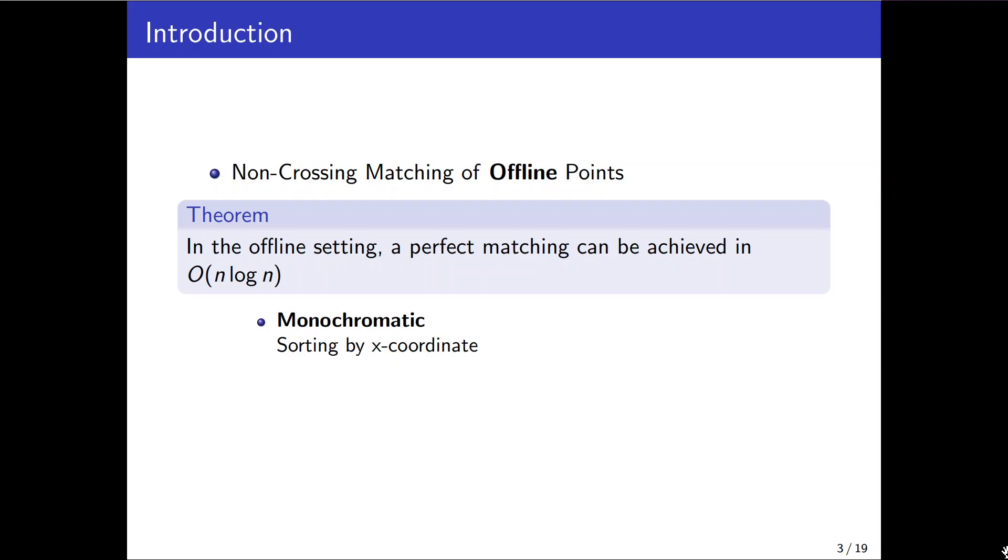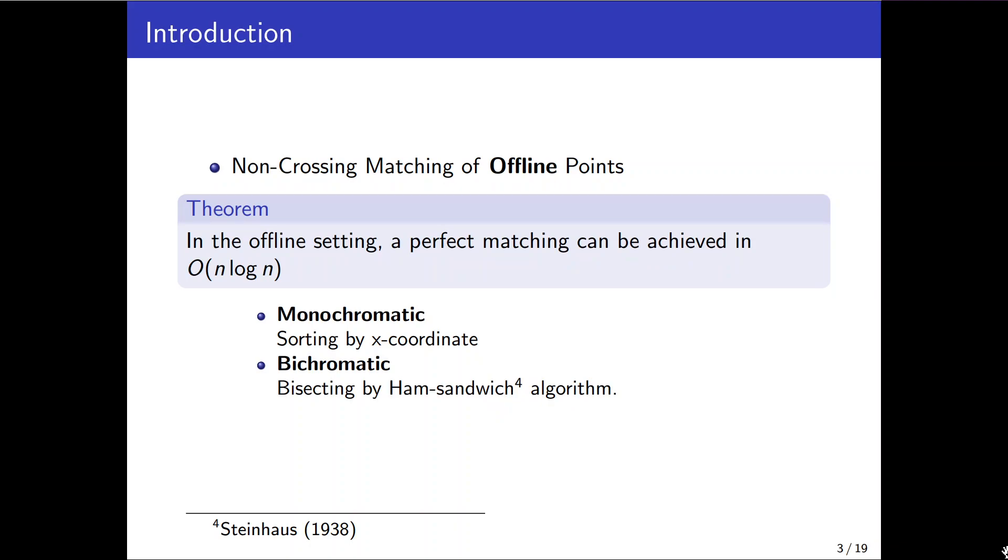The offline algorithm in monochromatic case works by sorting points for example based on their x-coordinate. Then it can reach to the perfect matching which means to match all points except possibly one.